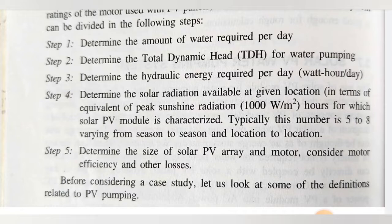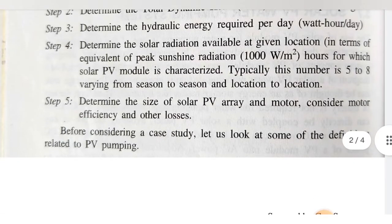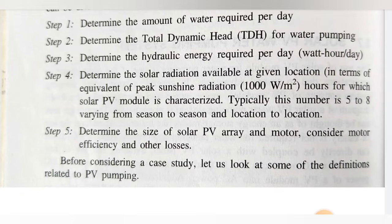Step four: determine the solar radiation available at a given location. Once you have calculated the hydraulic energy required, you should calculate the solar radiation available at the given location in terms of equivalent peak sunshine radiation — that is, 1000 watts per meter squared. This number typically varies from five to eight hours, varying from season to season and location to location. According to the availability of solar energy, you can calculate how much capacity of solar PV panel you have to use.